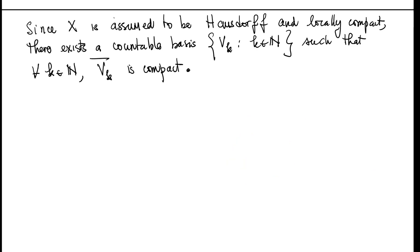Since we have assumed that X is Hausdorff and locally compact, I invite the viewer to pause and prove that there exists a countable basis — say V_k — such that for every k, the closure of V_k is compact. I will leave this as an exercise.